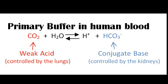The primary chemical buffer in human blood is the carbon dioxide bicarbonate ion. Recall, the components of a buffer are a weak acid and its conjugate base. The buffer in blood is commonly presented as carbon dioxide as the weak acid and bicarbonate as its conjugate weak base. The carbon dioxide is controlled by the lungs, and the bicarbonate is controlled by the kidneys.